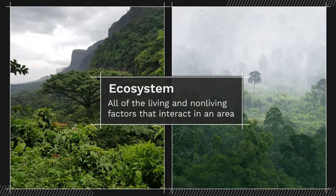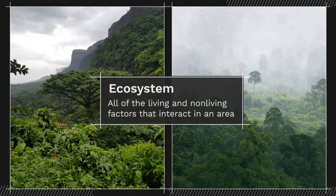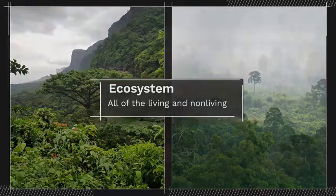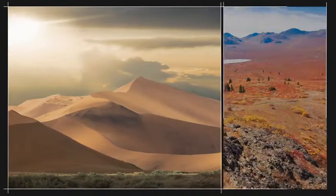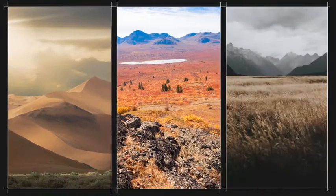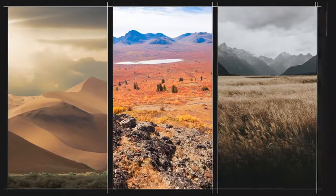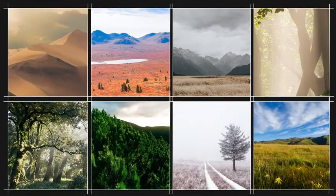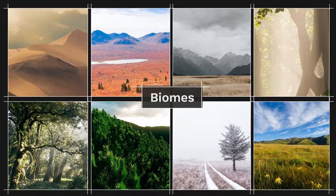An ecosystem is all of the living factors, like groups of organisms, and non-living factors, like weather, that interact in an area. Think about the size of our planet — there are countless ecosystems across the globe. To better understand our world, scientists categorize areas on Earth with similar ecosystems into biomes.